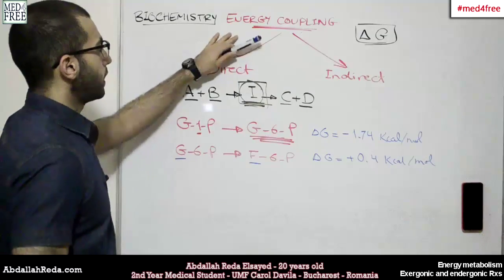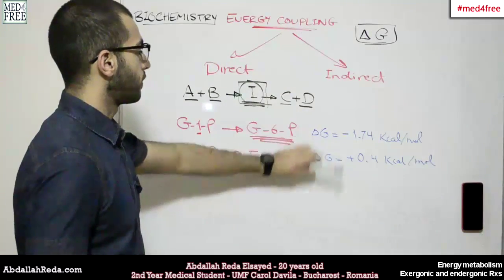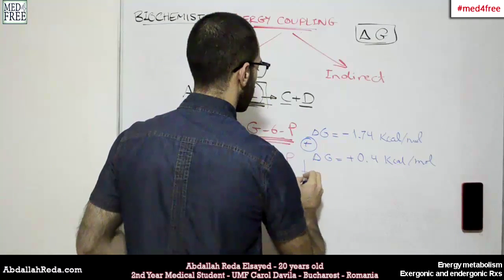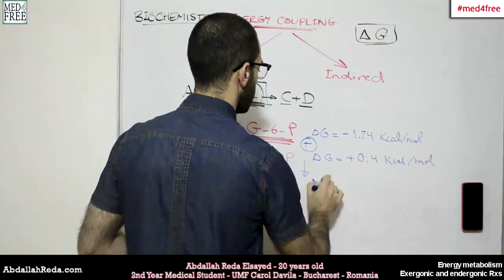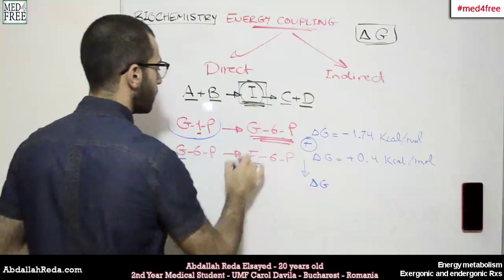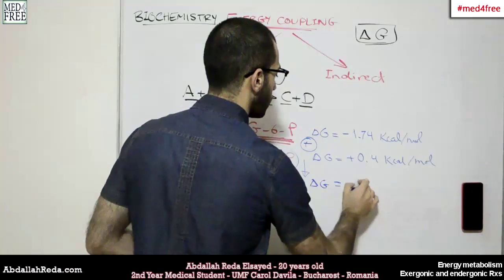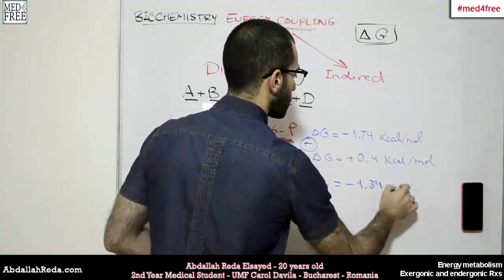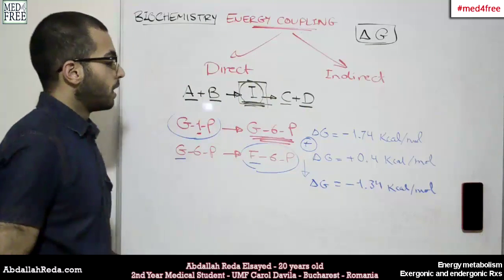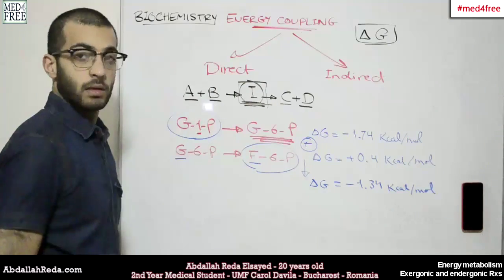And the energy coupling depends on the additive nature of the free energies. So we add them together to get the final delta G of the whole reaction of glucose 1-phosphate changing into fructose 6-phosphate. And we will get minus 1.34 kilocalories per mole. And this is an example for a direct coupling.